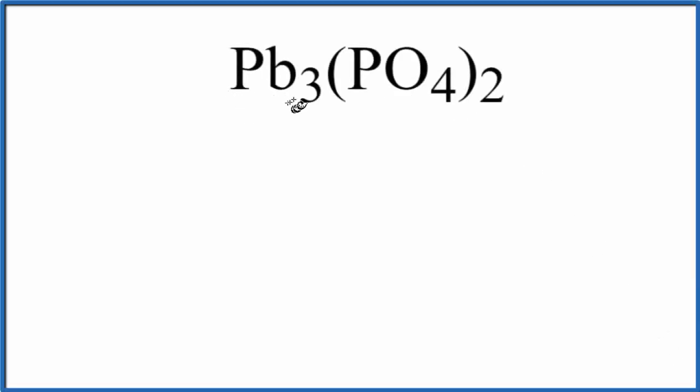To find the number of atoms in Pb3(PO4)2, that's lead phosphate, let's write the element symbols first.